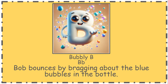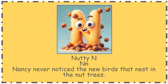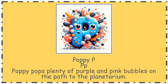And we're going to have Bob, bubbly B. Bob bounces by bragging about the blue bubbles in the bottle. And then we're going to have Egbert. Egbert is our short E, elephant sound. Egbert eyes everything on his friend's plate, even the extra egg noodles. And we're going to have Nancy the nutty N. Nancy never noticed the new birds that nest in the nut trees. And Ollie the octopus, short O, octopus sound.